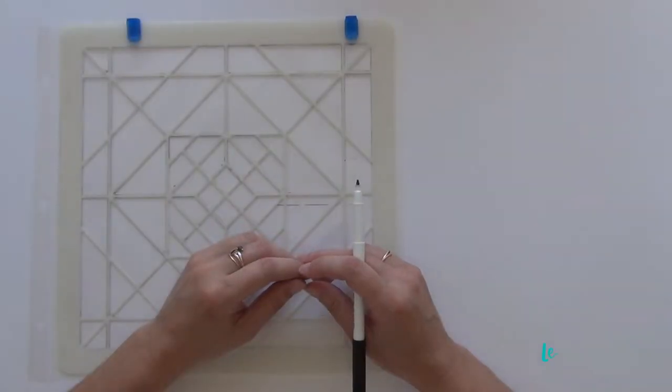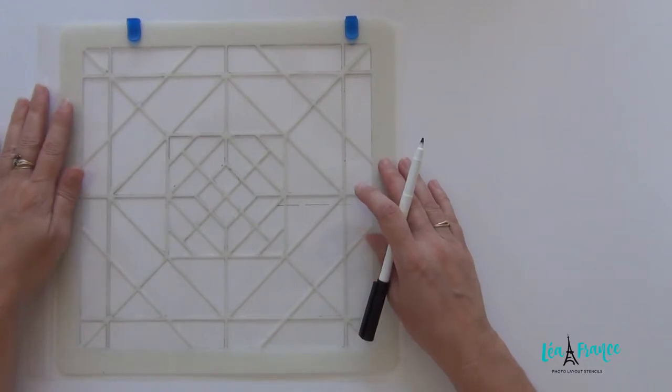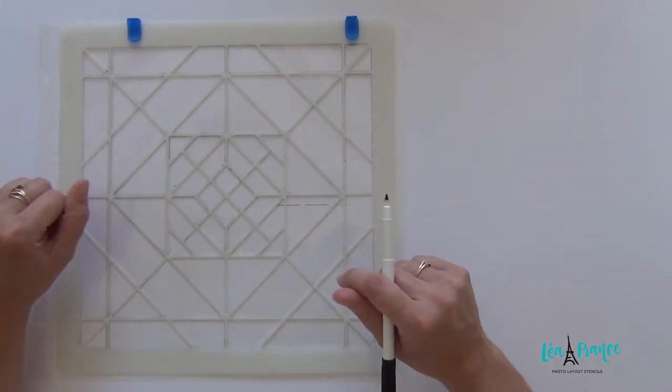Bonjour, today I'm going to talk about the quilt stencil and the shape that is hidden in the template. The shape I'm talking about is a cube and I'm going to show you where is the cube.